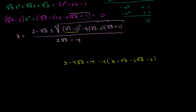So this is going to equal 3 plus 4 is 7, minus 4 square roots of 3. Then this 3 and this negative 2 become a 1. And the square root of 3 minus 2 square roots of 3 just becomes negative square root of 3.